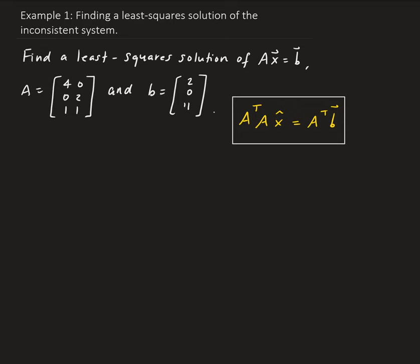In this example, we want to find a least-square solution of AX equals B, where A is given as a 3 by 2 matrix and B is given as the vector there. We can tell that B is definitely not in the column space of A. We can verify that because A is not a square matrix, so the only way we can solve this is to do a least-square solution.